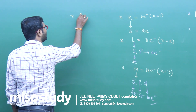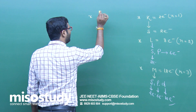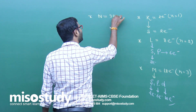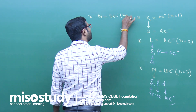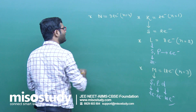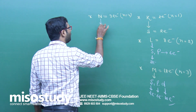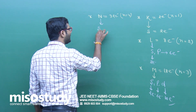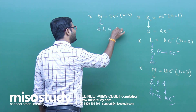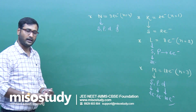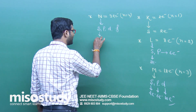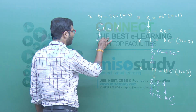N shell has 32 electrons and N equals 4, so it has 4 sub-shells — S, P, D, and F. S has 2 electrons.